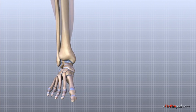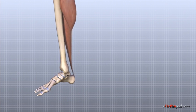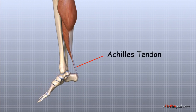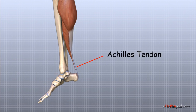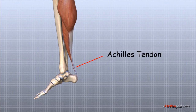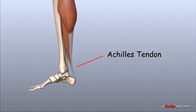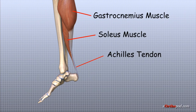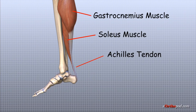Several muscles and tendons are important for ankle joint function. The large Achilles tendon is the most important tendon for walking, running, and jumping. It attaches the two calf muscles, the gastrocnemius and the soleus, to the calcaneus and allows us to raise up on our toes.